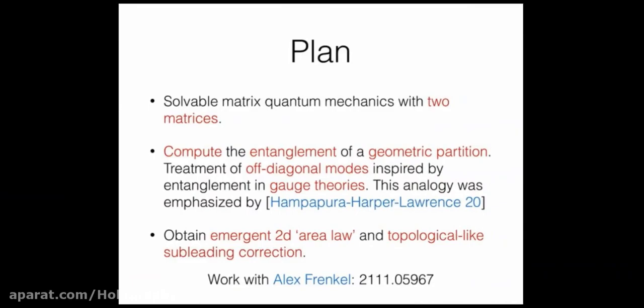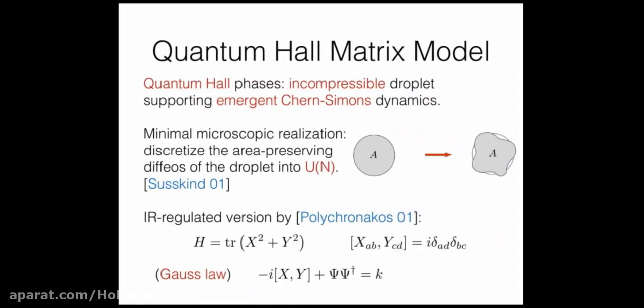I'm now going to give a solvable model of matrix quantum mechanics with two matrices — one step harder than one matrix — and compute the entanglement of a certain partition. The way we'll do it is inspired by how entanglement works in gauge theories, where off-diagonal modes are like strings stretching between eigenvalues — also like Wilson lines connecting charges on opposite sides of the cut. Everything I'm going to talk about is in a paper I wrote with my graduate student Alex Frankel a few months ago. The result will have two bits: an area-law bit and a topological-like term.